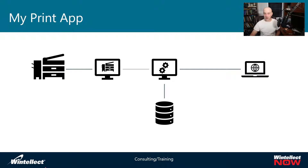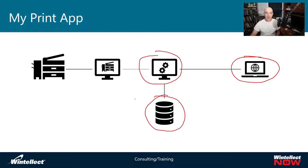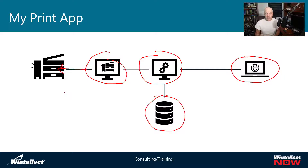This is the little print app where we have a client that can view photos on the left. There's a web server that accesses data off of a file share where it reads the images from. If a user on a client says print this image, it goes to a print server and then sends that over to a photo printer to print the image. It's a very basic application with a lot of different components to demonstrate what you need to move to Azure and what you can't move to Azure.